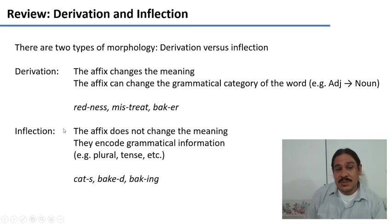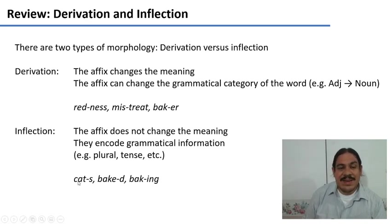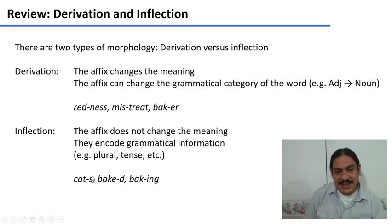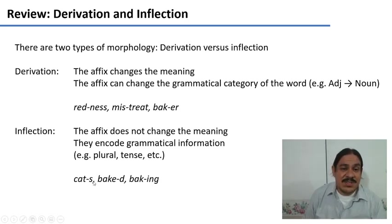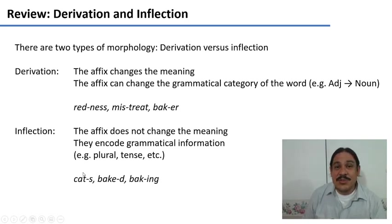Inflectional morphemes, on the other hand, don't change the meaning of the root. For example, in 'cats,' we have the inflectional suffix '-s' for the plural. What this does is give you additional grammatical information — for example, that there are many cats. But the kind of creature remains the same; it's always a cat. The meaning has not changed.